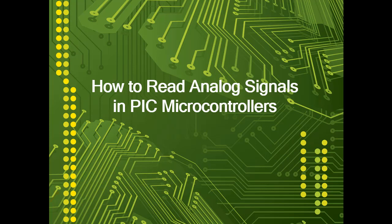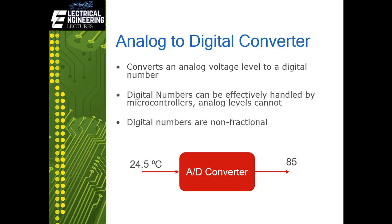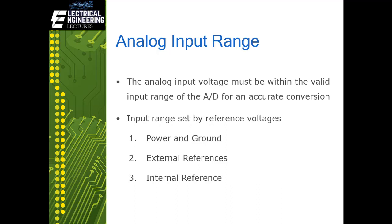Let us begin with the introduction of A-to-D converters in PIC microcontrollers. Microcontrollers are very efficient at processing digital numbers but they cannot handle analog signals directly. An analog-to-digital converter converts an analog voltage level to a digital number. The microcontroller can then efficiently process the digital representation. By definition, digital numbers are non-fractional whole numbers, so if you give an input to an A/D converter it will read the whole number — for example 85 in our case.